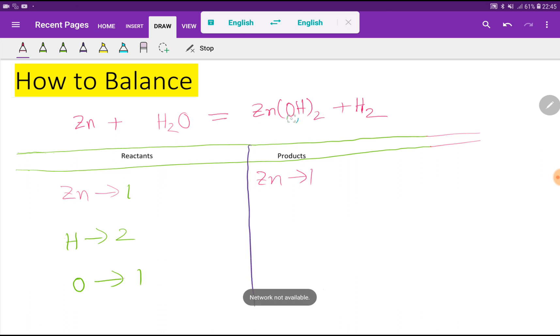For zinc we have one, but oxygen we have two because of the subscript. Then hydrogen is also two. But we have another two hydrogen here, so basically we have four hydrogen total.